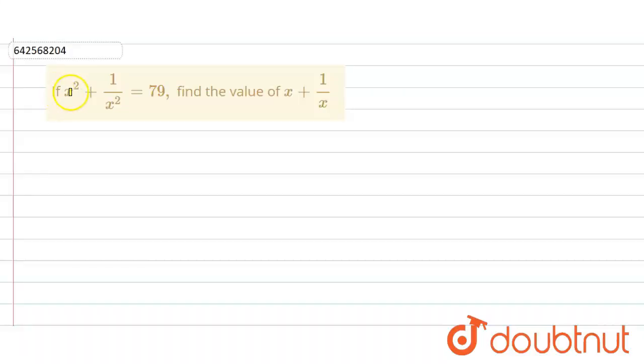In the given question, if x² + 1/x² = 79, we have to find the value of x + 1/x.